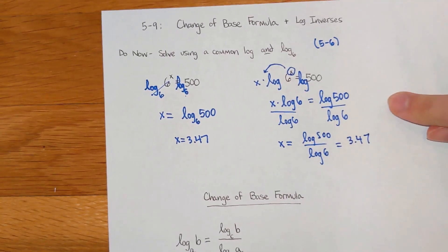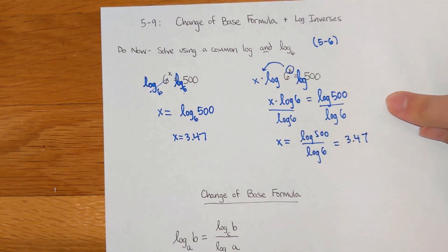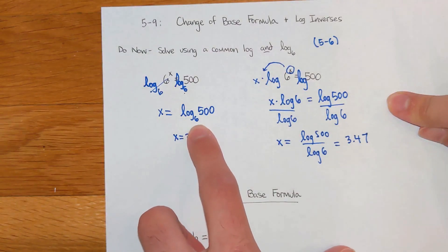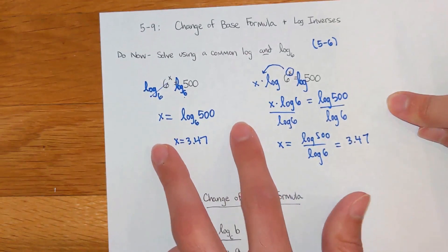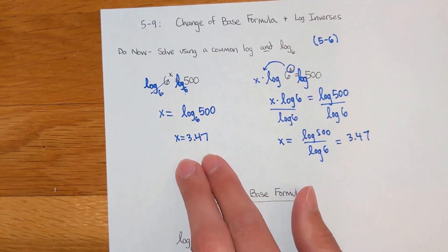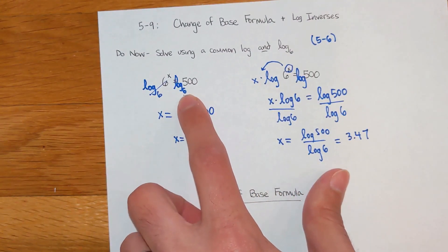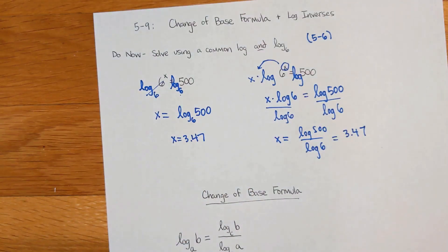This second option is what I had to do when I was in high school, because we didn't have a calculator that could do a base 6. You only had the option for a regular common log. This way is a lot more popular now and easier, I think, just because you have that flexibility. But this also gets you the same answer.